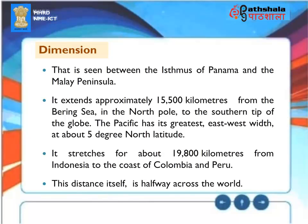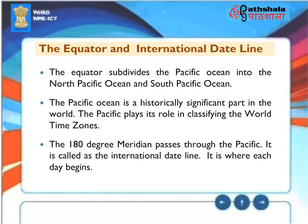The Pacific stretches about 19,800 kilometers from Indonesia to the coast of Colombia and Peru — a distance that is halfway across the world. The Equator subdivides the Pacific Ocean into the North Pacific and South Pacific Oceans. The Pacific plays a role in classifying world time zones: the 180-degree meridian passes through the Pacific, known as the International Dateline, which is where each calendar day begins.